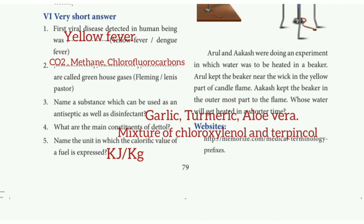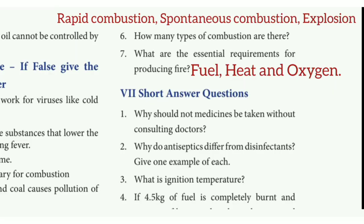Fourth question: what are the main constituents of Dettol? The answer is a mixture of chloroxylenol and terpineol. Fifth question: name the unit in which the calorific value of a fuel is expressed. The answer is kJ/kg. Sixth question: how many types of combustion are there? The answer is rapid combustion, spontaneous combustion, and explosion. Seventh question: what are the essential requirements for producing fire? The answers are fuel, heat, and oxygen.